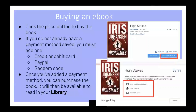Next, buying an e-book. Click the price button to buy the book. If you do not already have a payment method saved, you must add one. It can be either a credit card, debit card, PayPal, or a redeemed code. Once you added a payment method, you can purchase the book. Then it will be available to read in your library.